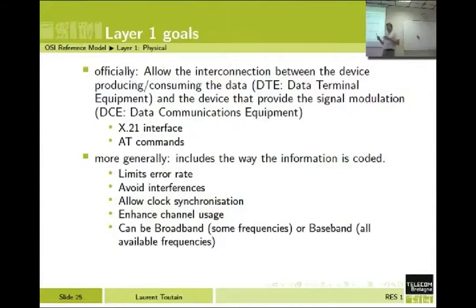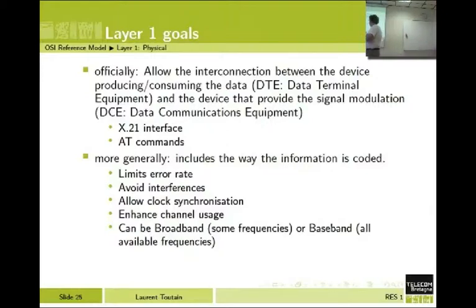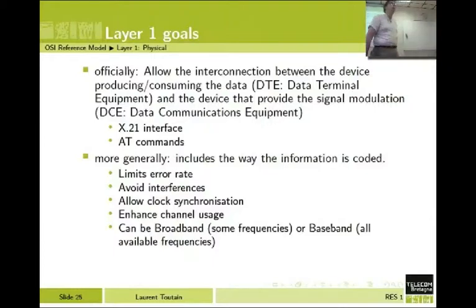That's the real definition of Layer 1: to talk with the entities that can do the modulation, but not do the modulation ourselves. In practice, everybody says Layer 1 does the modulation — that's not strictly true, but it's what everyone believes, so it's what we will also assume. The problem is we have to define how we modulate the signal. We want the lowest error rate possible on our link, because if there are too many errors, my computer will not be able to correct them and the data link won't work. So I need a good coding scheme.